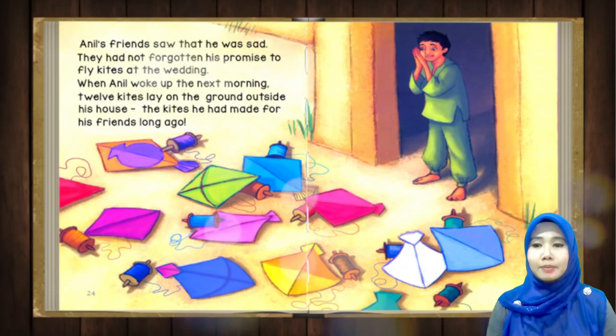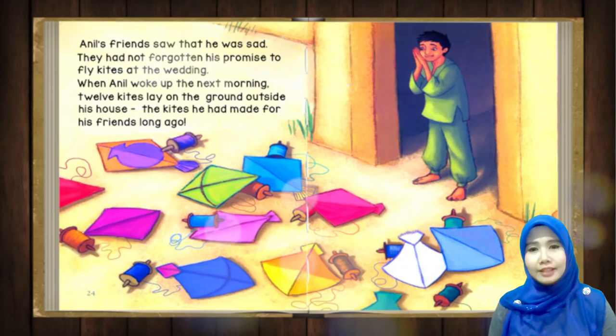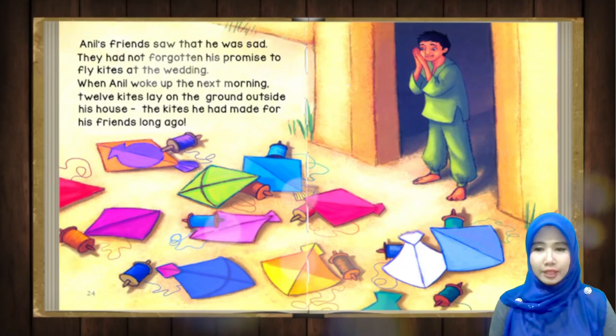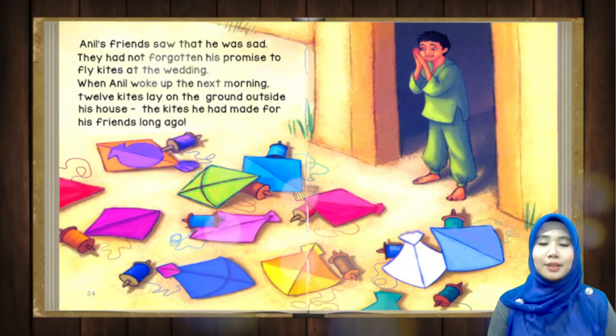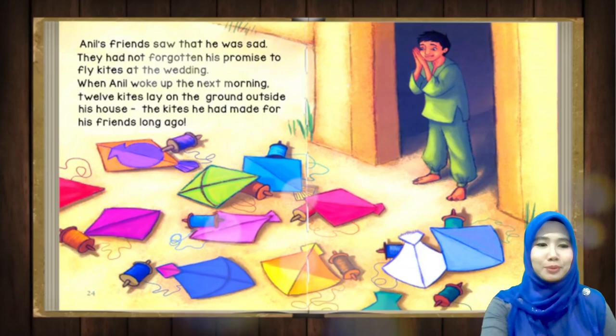They had not forgotten his promise to fly kites at the wedding — mereka semua tak lupa apa yang Anul dah janji untuk buat dekat wedding tu. He said he wanted to fly 12 kites during the wedding. When Anul woke up the next morning — apabila Anul bangun pagi tu — 12 kites lay on the ground outside the house — 12 kites tu ada atas tanah di luar rumah. The kites he had made for his friends long ago — dia dah pernah buat untuk kawan-kawan dia lama dulu.